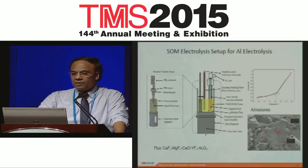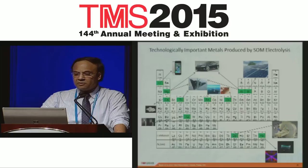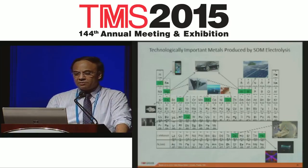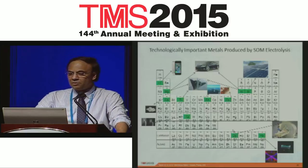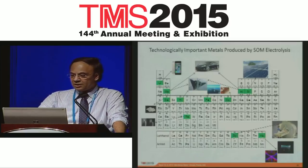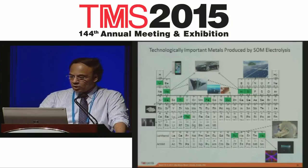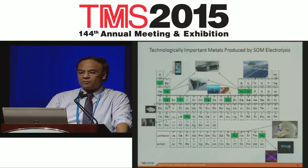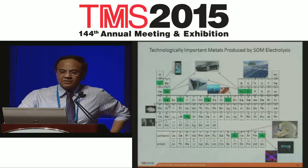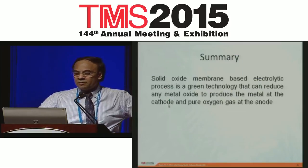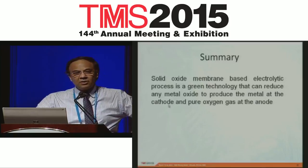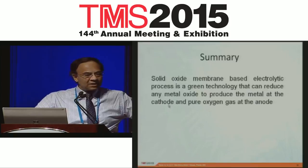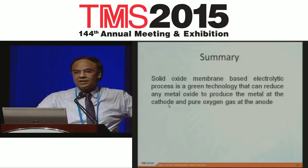Here I have listed the different metals produced using solid oxide membrane electrolysis: lithium, magnesium, calcium, titanium, tantalum, iron, copper, aluminum, silicon, dysprosium, and erbium. With this, I hope I have been able to convince you that the solid oxide membrane-based electrolytic process is a green technology that can reduce any metal oxide to produce the metal at the cathode and pure oxygen gas at the anode.